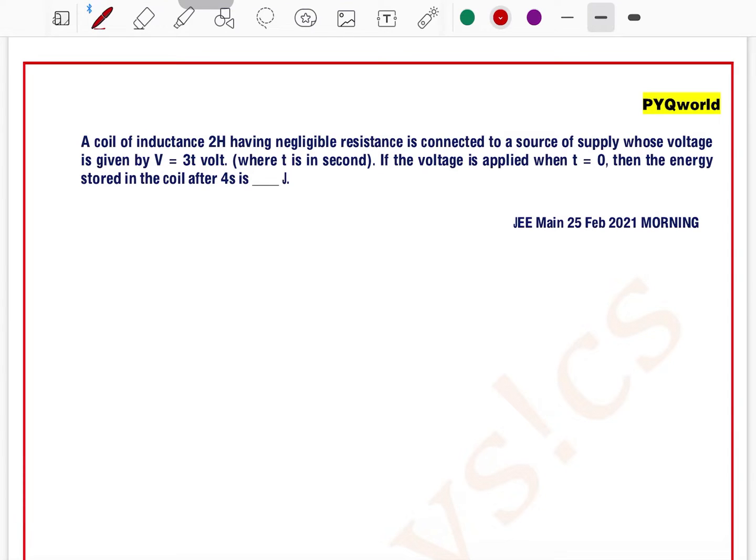A coil of inductance 2 Henry having negligible resistance is connected to a source of supply whose voltage is given by V equals 3T volts. If the voltage is applied when T equals 0, then the energy stored in the coil after 4 seconds is... So the voltage across the inductor is 3T.